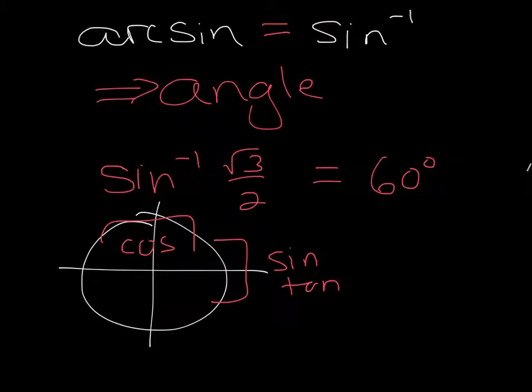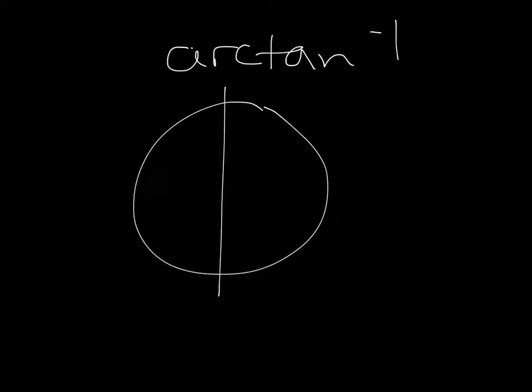And the only other thing that I want to mention is if you go... Let me do another page here. If I'm asking for, like, let's say arc tan of negative 1. So arc tan of negative 1, if I look at my unit circle, is going to be down here. First of all, I want you to notice that it's negative, so I'm going to be in the fourth quadrant, right?